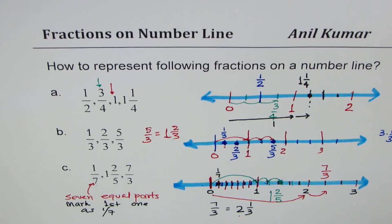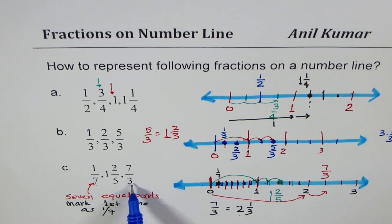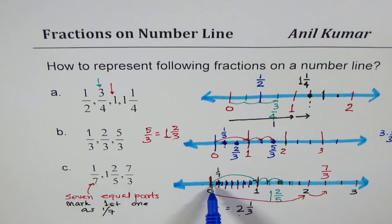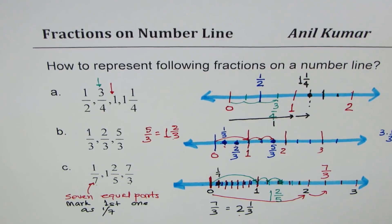I hope you understand — there could be some messiness in the drawing, but the concept is what matters. To represent any fraction on a number line, divide a whole into equal parts given by the denominator and move to the numerator part. I'll take a few more videos to show other methods for representing fractions on a number line. Thanks for watching — feel free to post questions, and all the best.